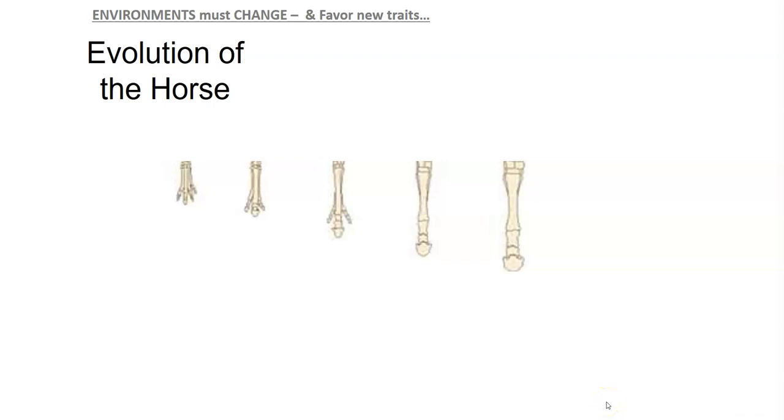To have evolution take place, you must have an environmental change. Here's an example of the evolution of the horse. Before I go too far into it, let's just take a minute and look at the feet. Look at what's going on here. We have bones that we have laid out next to each other.